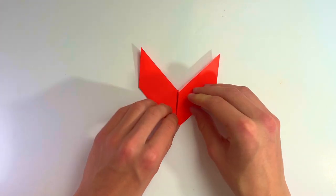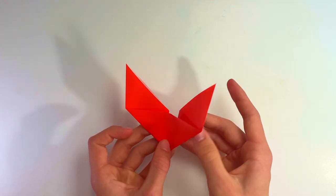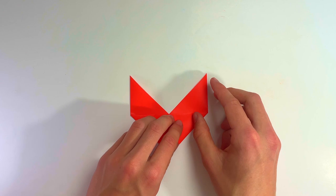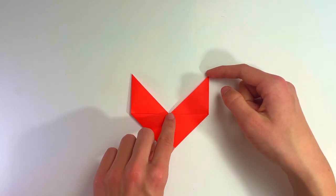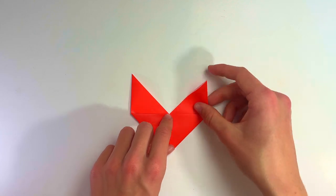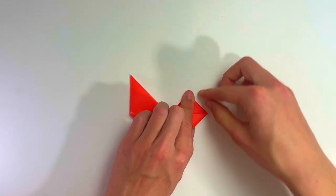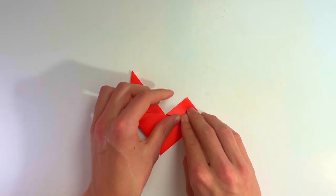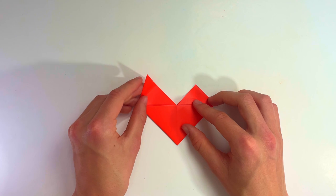Perfect! We've got everything nice and neat. Now we're going to turn the model around, and we're going to fold this point and bring it down to that point here. Do the same thing on the left side—take this point and just bring it down.